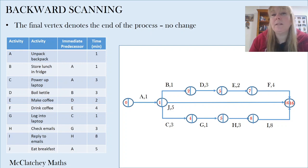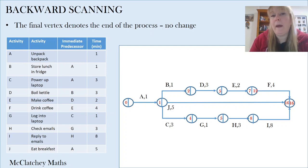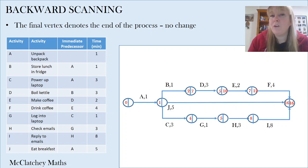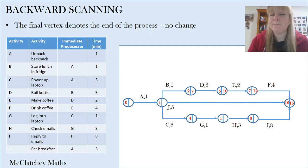Let's work our way backwards across the top of our network, which was the process of drinking my coffee. If I take away the time for activity F from the end time: 16 take away 4 minutes equals 12. I write 12 into the right-hand side along the top of that process. So 12 take away 2 is 10, and 10 take away 3 gives me 7 minutes. I stop there because that next vertex represents a decision-making point — three pathways and three parallel processes. We'll make our decision later once we've completed the remaining vertices.